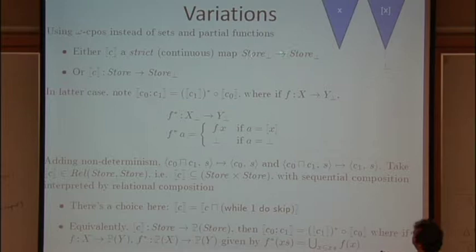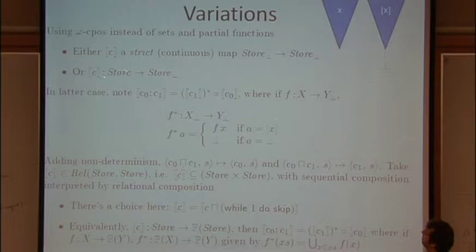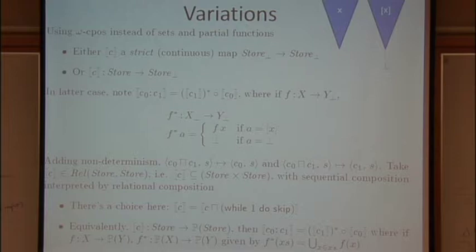this has sort of gratuitous information in here because we give as input a store or bottom and a slightly nicer way of formalizing this instead of saying it has to be a strict function, i.e. preserving bottom from store lift to store lift, we can say well the meaning of a command is a function from stores to stores lift. We only have to say what it does on defined stores because we know what it's going to do if you never reach it you'll end up with non-termination.